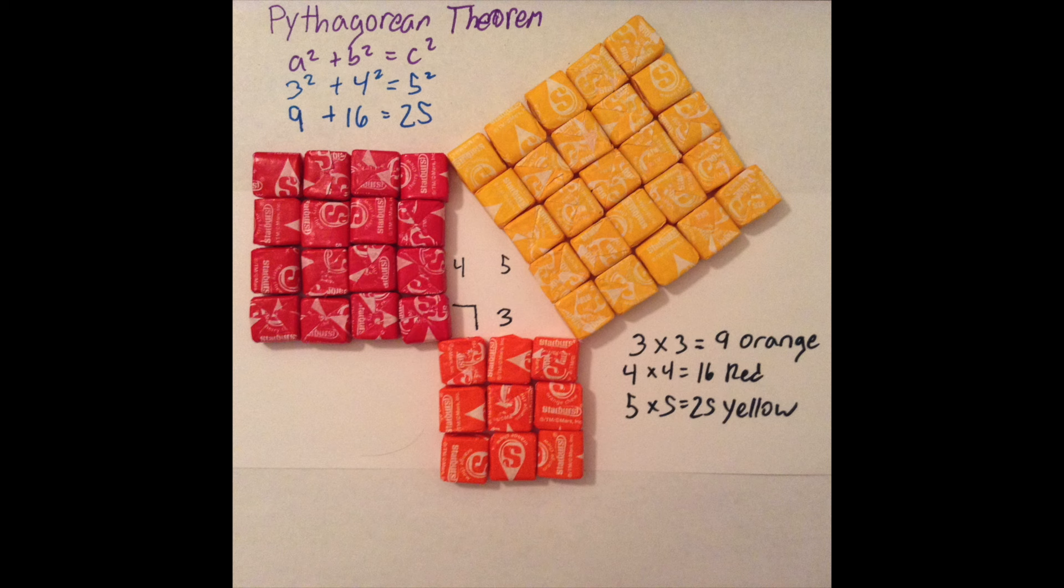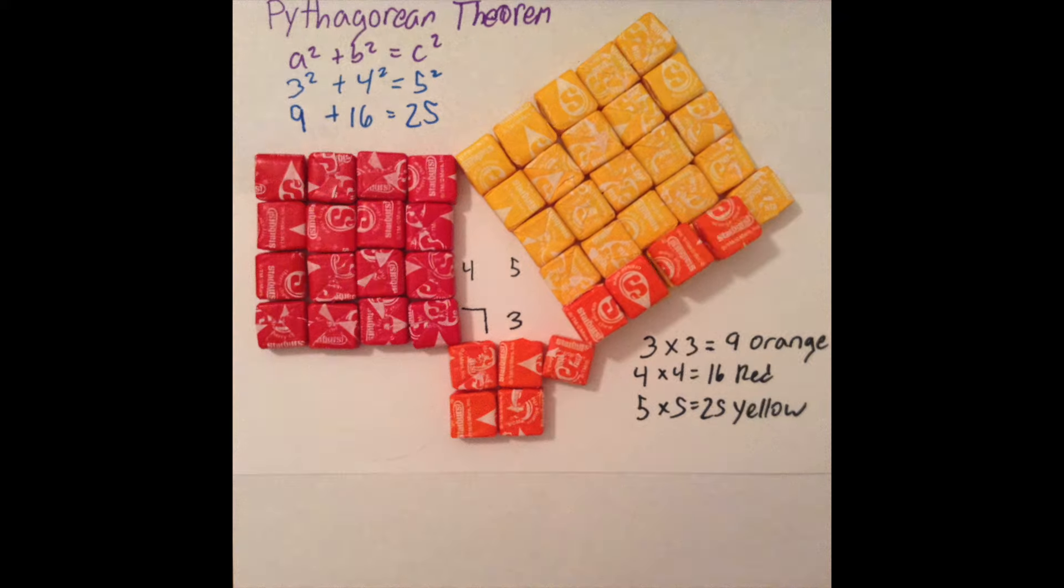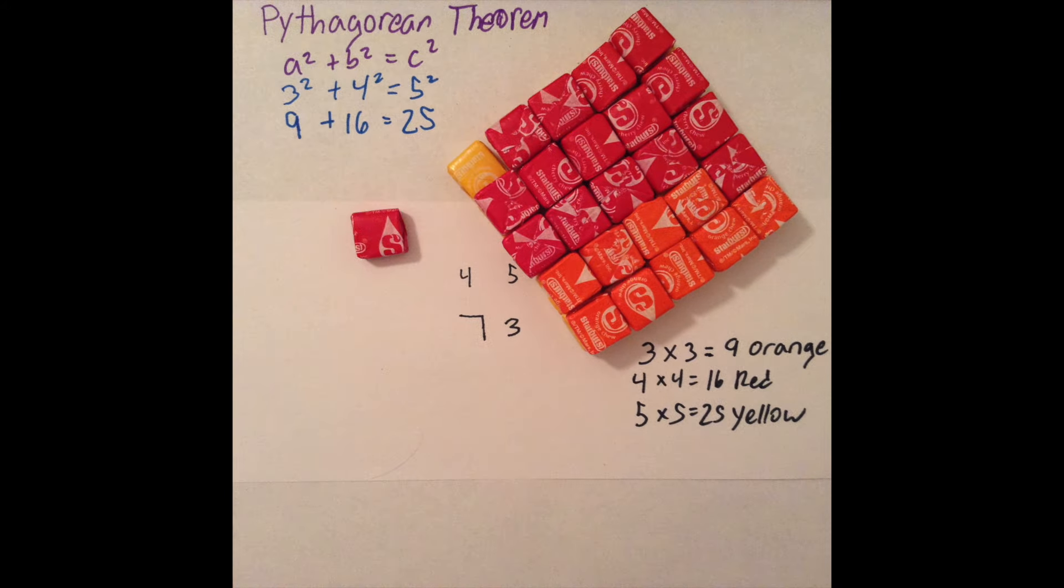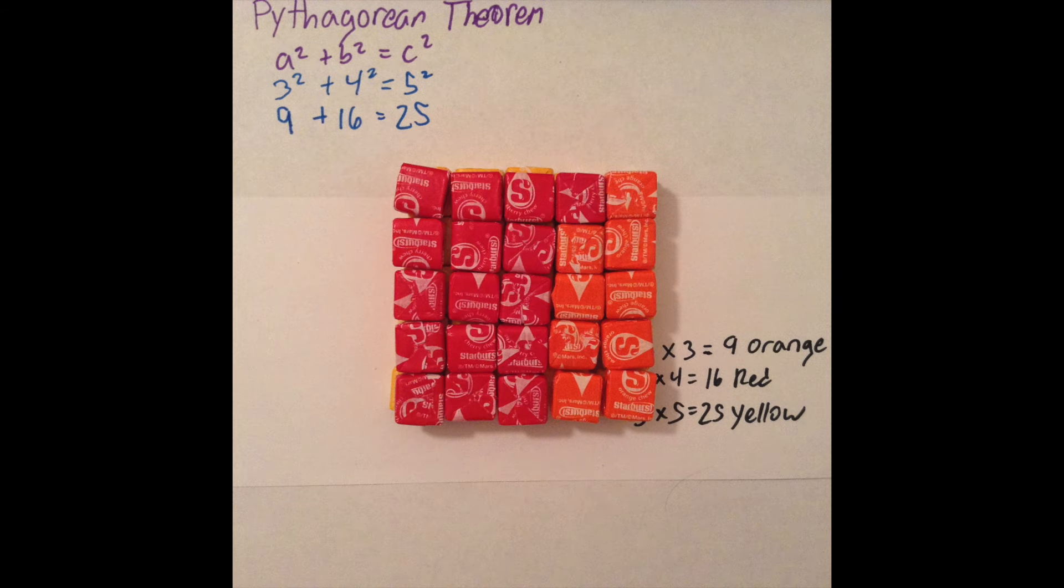Now, if you don't believe me, let's take the orange square and the red square and put it into the yellow square. Ready? As you can see, the area of the yellow square is filled up.